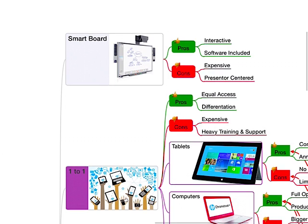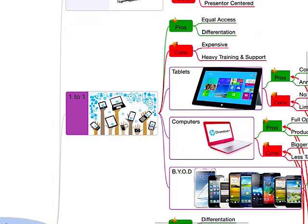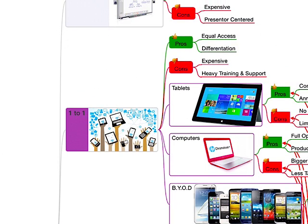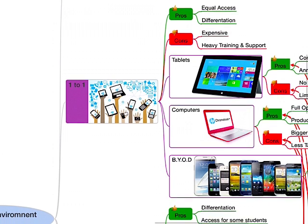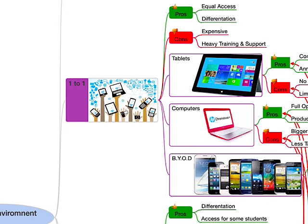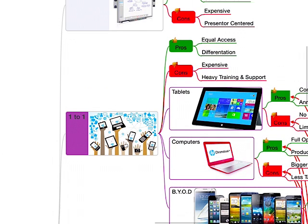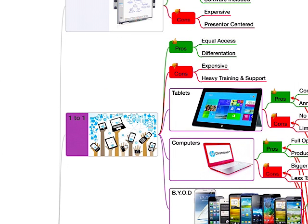Now let's take a look at one of my favorite things — one-to-one, one device per one student. We have a few choices for one-to-one: we have tablets, computers, and bring your own device. As far as one-to-one goes, it's great because it really gives students equal access and provides them with a lot of differentiation. But it can be expensive, and there's heavy training for teachers, as well as IT support that is needed.